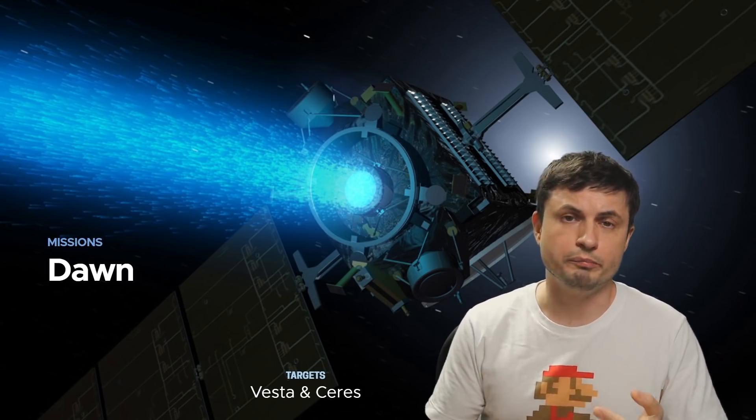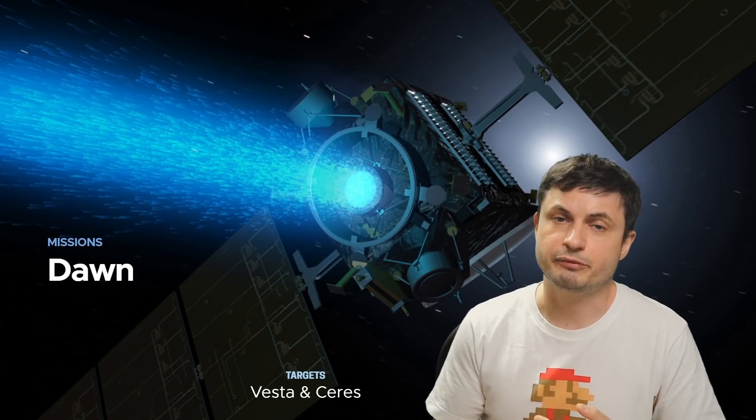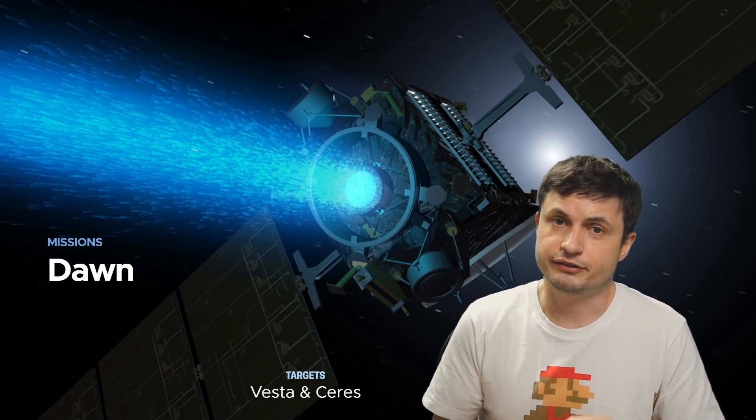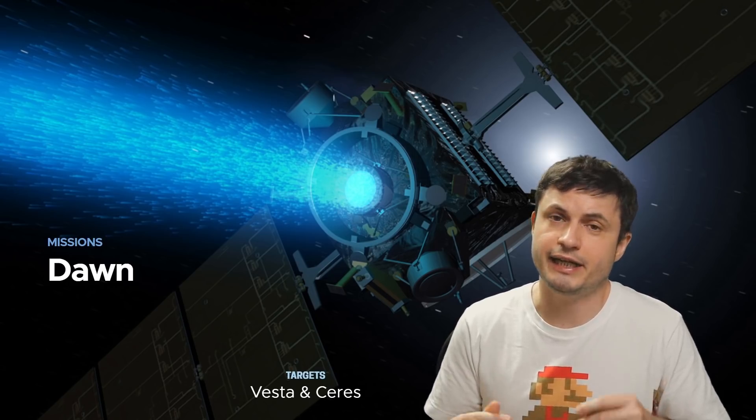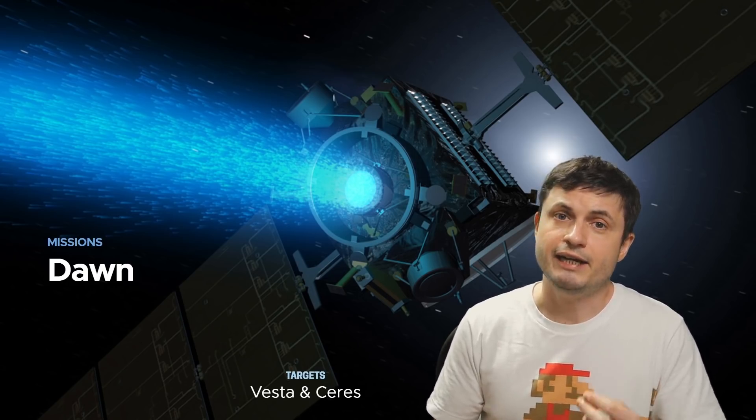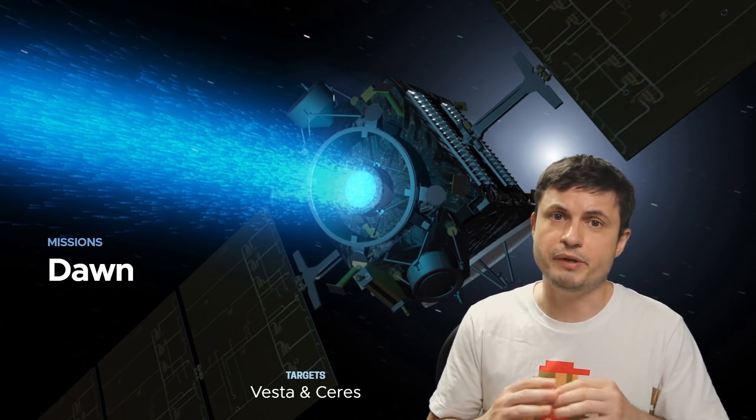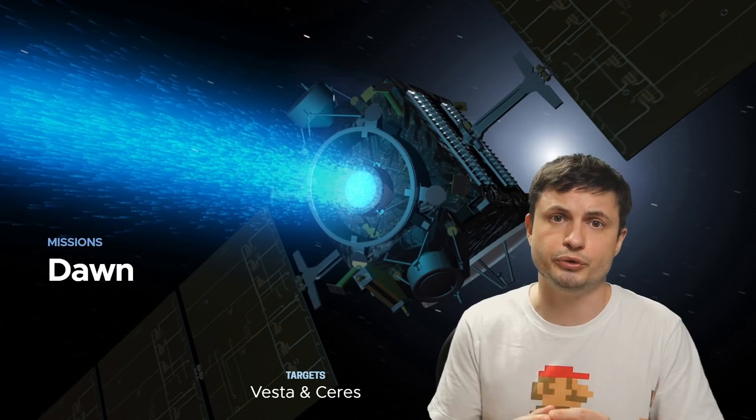Now you might already know about the Dawn mission. This was the NASA mission that spent quite a long time around Vesta and around Ceres. It studied them in a lot of detail, analyzing every single crater, studying every single part of the surface with a lot of detail. And all of the craters and all of the formations on Vesta are well known today.